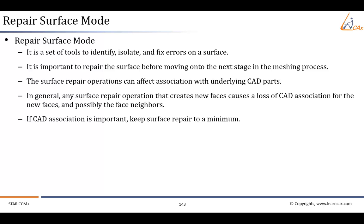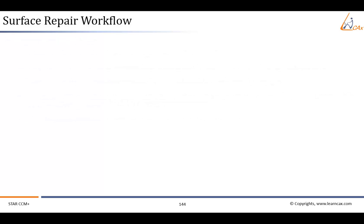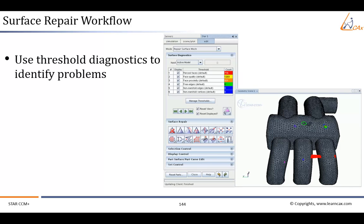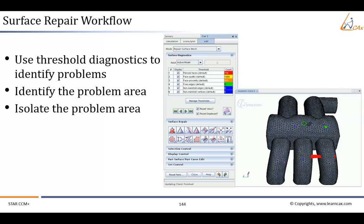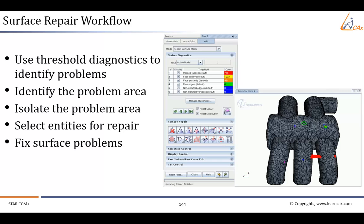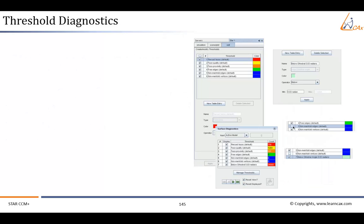After a quick introduction to surface repair mode, let us see the general procedure while using surface repair mode. What is the surface repair workflow? In general, you can use these standard steps to fix surface errors: use threshold diagnostics to identify problems, identify the problem area, isolate the problem area, select entities for repair, and fix surface problems.